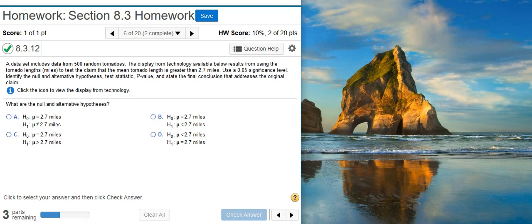Here's our problem statement. A data set includes data from 500 random tornadoes. The display from technology available below results from using the tornado lengths in miles to test the claim that the mean tornado length is greater than 2.7 miles. Use a 5% significance level. Identify the null and alternative hypotheses, test statistic, p-value, and state the final conclusion that addresses the original claim.